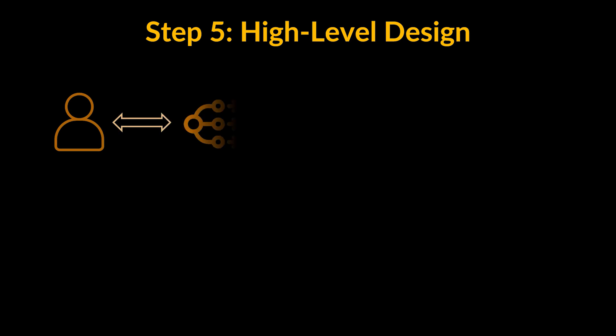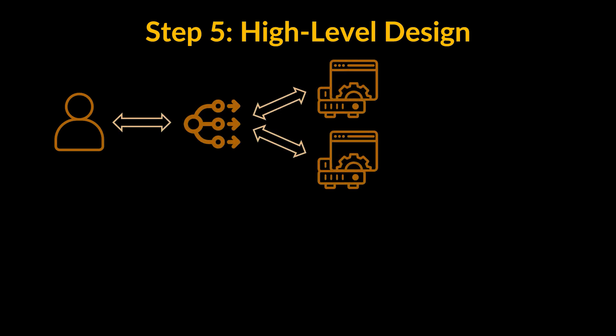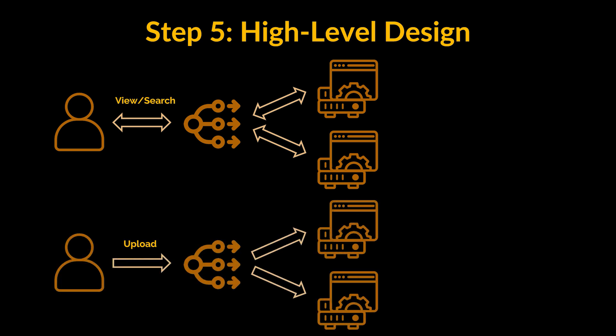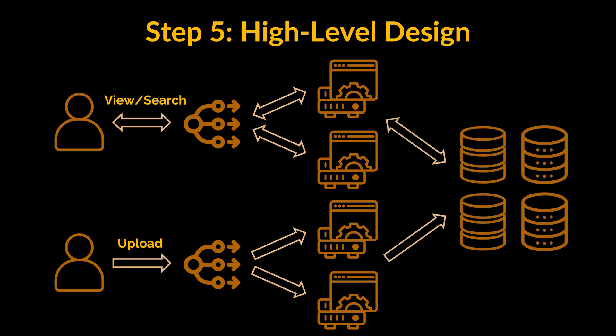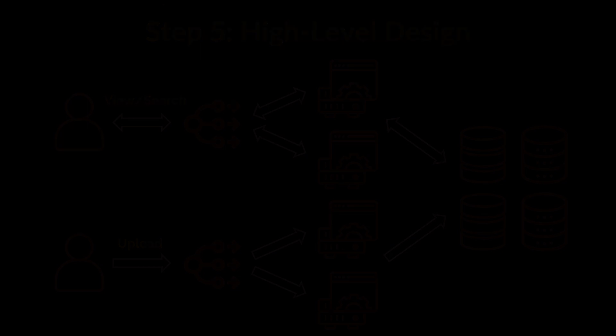Step five: high level design. In this step, try to draw a block diagram with five to six boxes representing the core components of the system. For Instagram at a high level, we will need multiple application servers to serve all the read/write requests, with load balancers in front of them for traffic distribution. Since we'll have a lot more read traffic compared to write, and writes will be picture uploads that consume more connections as uploading is a slow process, we can decide to have separate servers for handling these scenarios. On the back end, we need an efficient database to store all posts and support a huge number of reads, plus a distributed file storage system for storing photos and videos.